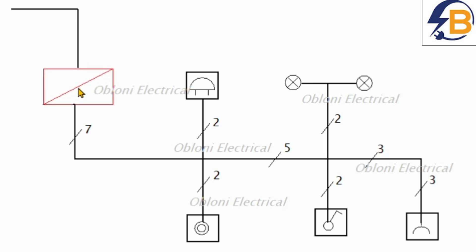Another important thing is that you should be able to identify what each symbol in the drawing represents. In the second video of this series I explained what electrical symbols are and gave examples of most of the basic electrical symbols used in electrical drawing. This symbol here represents a push button, so we are using it to represent the bell switch, and then this is an electric bell.